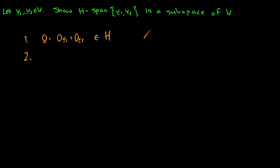For the second condition, we define vectors in H. Let U equal S1·V1 plus S2·V2, and let V equal T1·V1 plus T2·V2, where both U and V are in H. We need to show that U plus V is also in H.